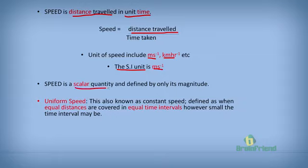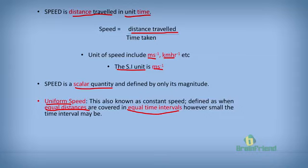Speed is a scalar quantity and defined only by its magnitude. Uniform speed, also known as constant speed, is defined by an object traveling equal distances in equal time intervals, however small the time interval may be.